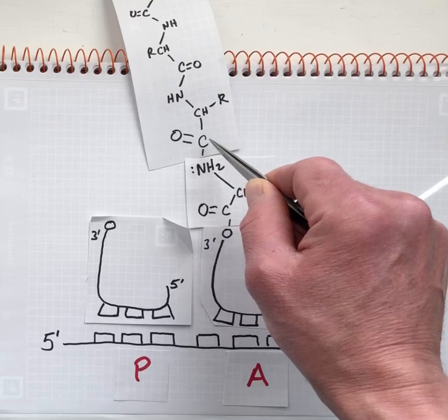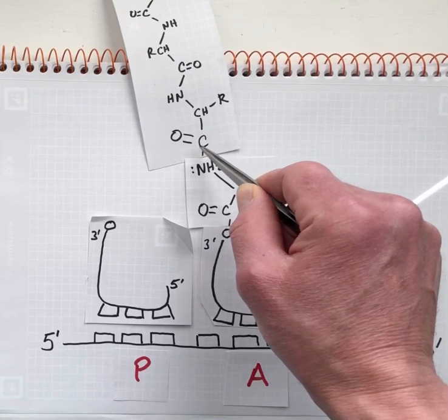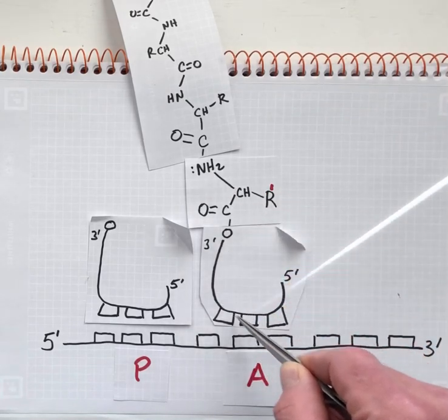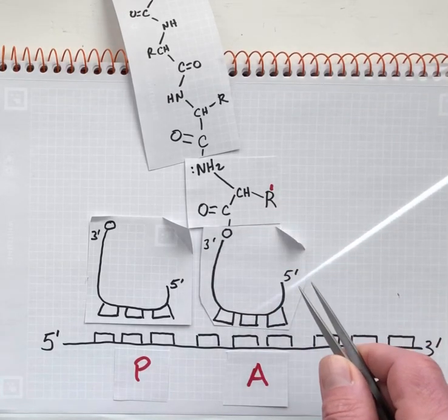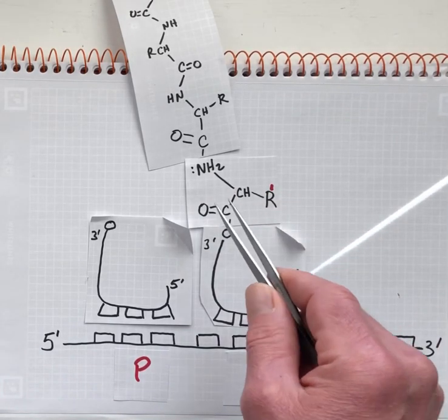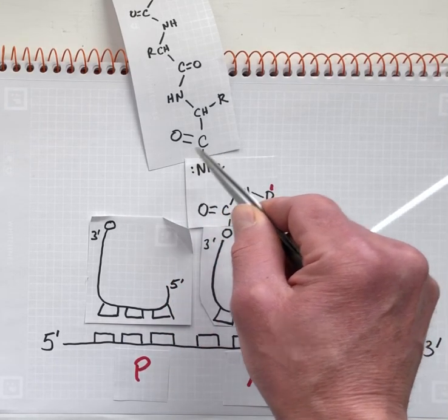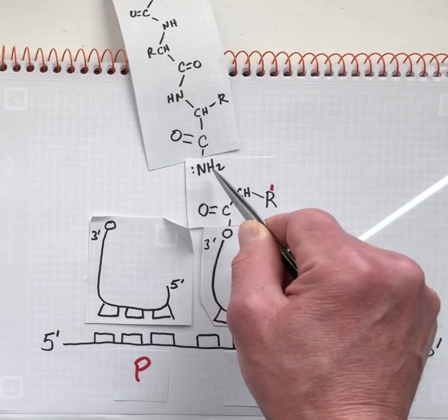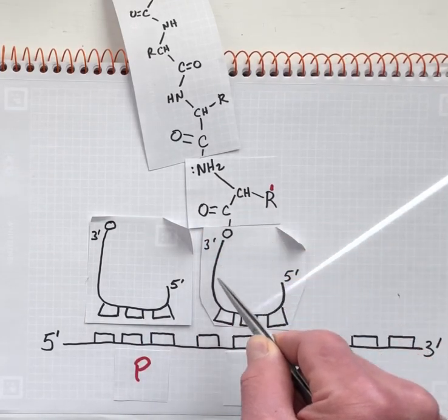The carbonyl carbon of what used to be the ester bond is the electrophilic center, and the amine of the aminoacyl tRNA is the nucleophile. This is called a peptidyl transfer reaction. We're moving the peptide from this tRNA onto the amino group of the aminoacyl tRNA.